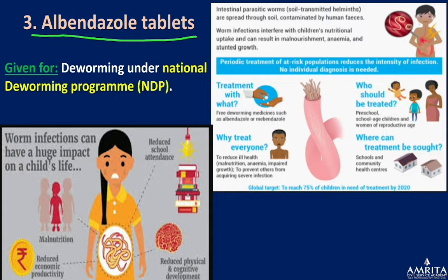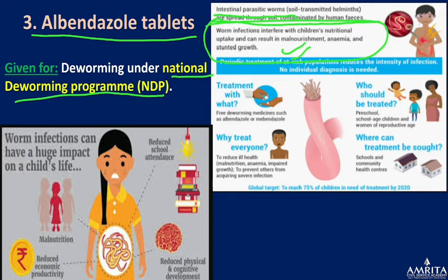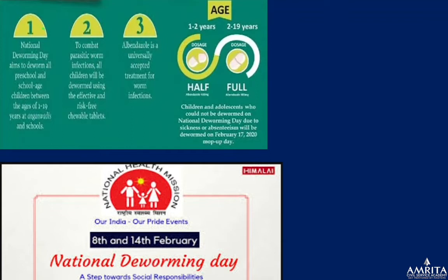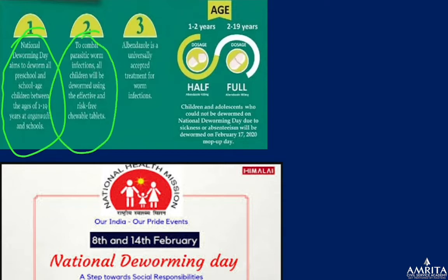Albendazole tablets are given under the National Deworming Program to fight intestinal parasitic worms spread through soil contaminated by human feces. Worm infections interfere with children's nutritional uptake, causing malnutrition, anemia, and stunted growth. National Deworming Day aims to deworm all preschool and school-age children between 1 and 19 years at anganwadis and schools.